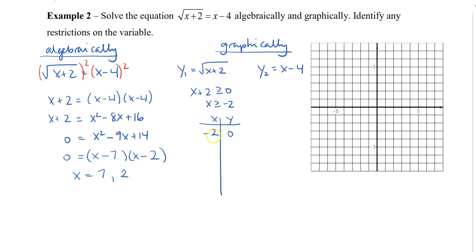Using the trick of adding consecutive odd numbers 1, 3, and 5 to negative 2, I get x-values of negative 1, positive 2, and 7. Plugging these in: root of 1 is 1; root of 4 is 2; root of 9 is 3. So my four points are: negative 2 and 0; negative 1 and 1; 2 and 2; and 7 and 3.